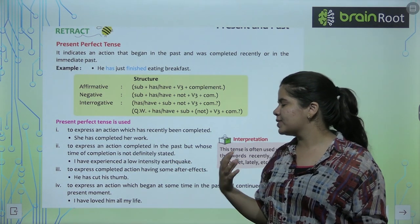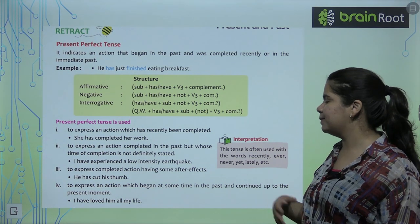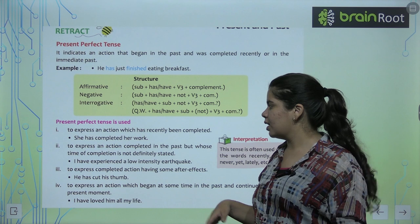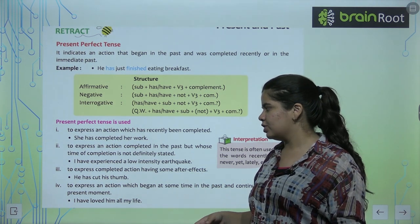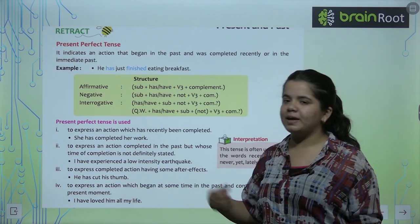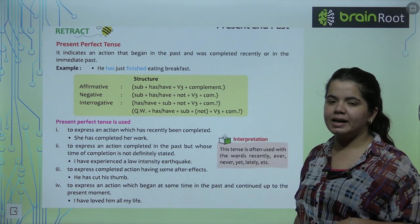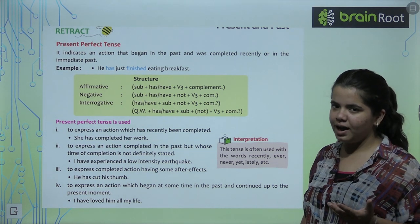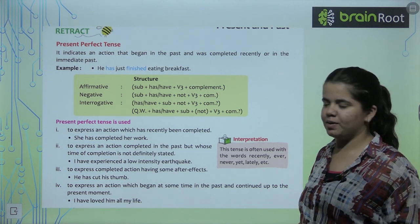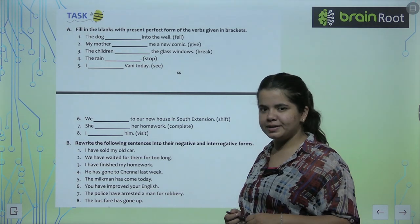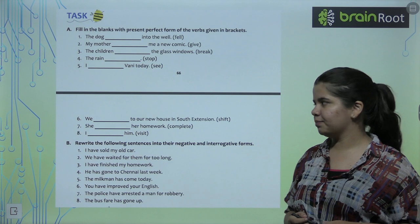How can we use it? To express an action which has recently been completed. She has completed her work. I have experienced. She has cut his thumb. So you can see when we are in the present perfect, you can see have plus what is the past form? Yes, past form. So you can see present or past use.